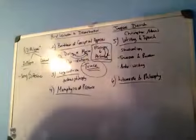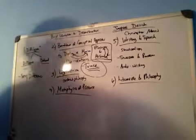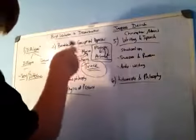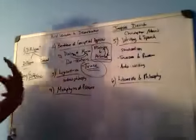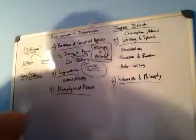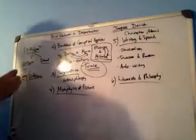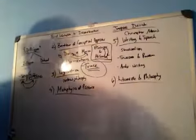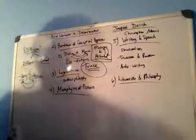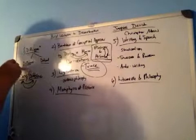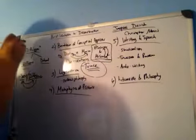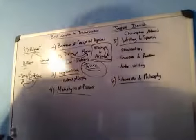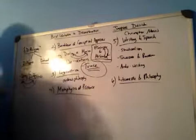In the essay 'Différance,' he tries to explain the concept of sameness — how same and difference is similar to the concept of presence and absence, how you can turn 'same' inside out and find difference. Break down difference and you'll find the same. He put the letter A in 'Différance' because in French you can't hear the spelling difference between the regular spelling and his spelling — to show there is sameness in difference. 'Différance' with an A breaks down to 'difference' and 'deferral.'